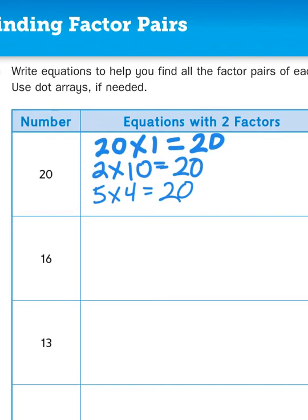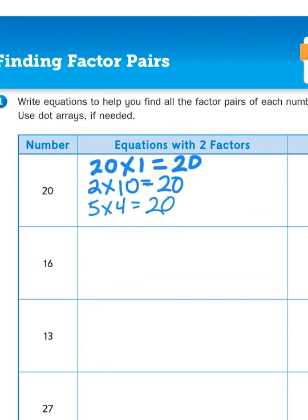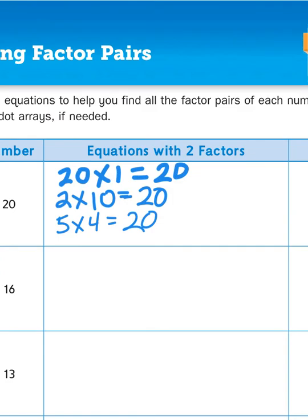So what I have right now is three sets of numbers. 20 times 1, 2 times 10, and 5 times 4. Now, if 20 times 1 gives me 20, then the opposite, when I reverse the number order, 1 times 20 also gives me 20.